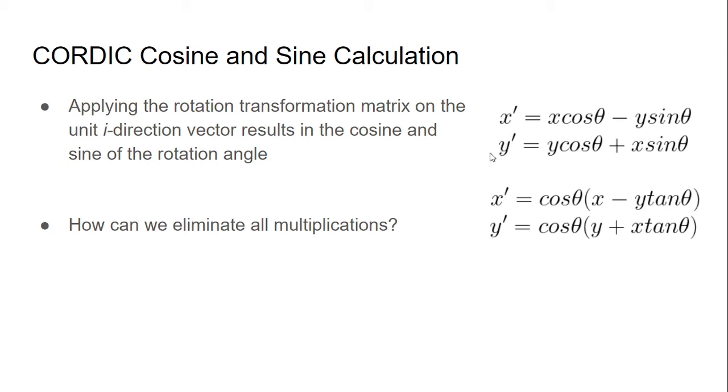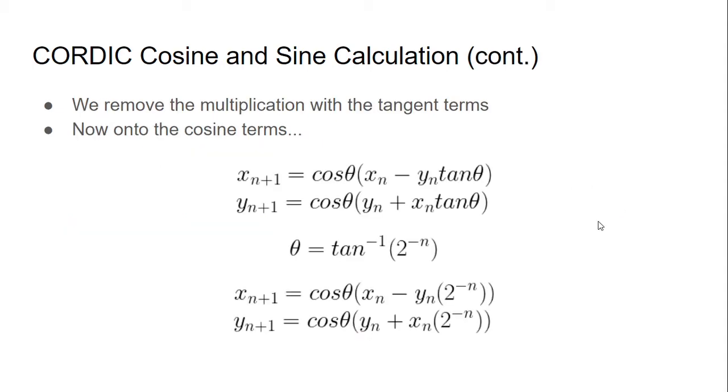Now the next question is, how can we eliminate the multiplications so that these sets of equations can be easily mapped to hardware without using multipliers? So I've done the first step here, which is to factor out the cosine of theta term, so that way it's easier to work with. So now what we want to do is we want to get rid of the multiply by tan of theta here. So how can we do that? So one thing we could do is constrain this theta value here, so that it's always going to be the inverse tangent of 2 to the negative n, where n is the number of stages.